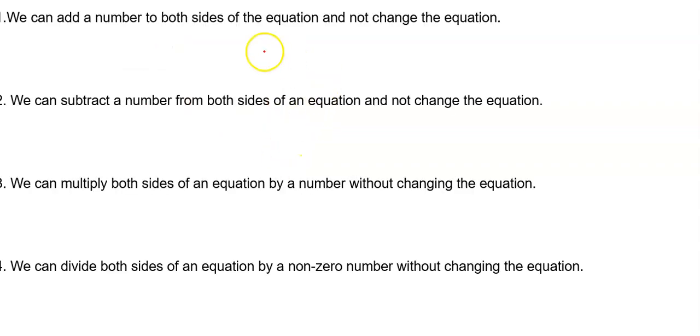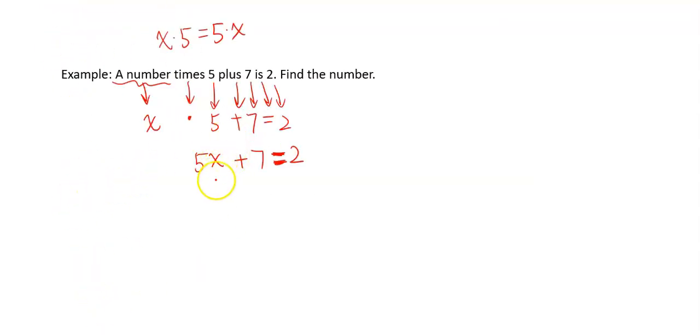And an equal sign can be considered as a balanced scale. So here we have four properties that will help us solve equations like these, to get x by itself, to figure out what x is.